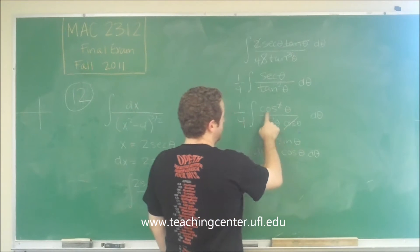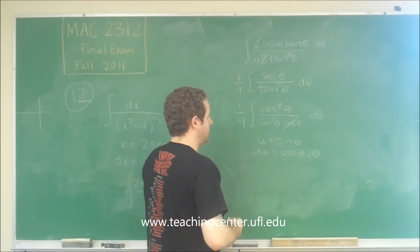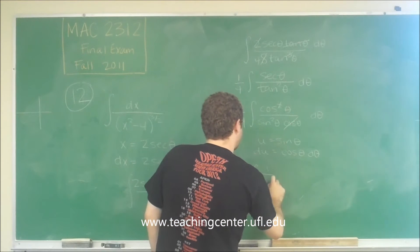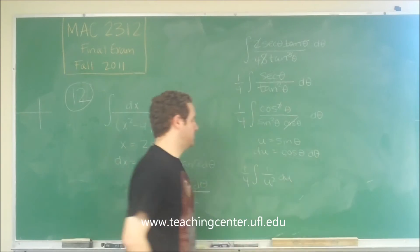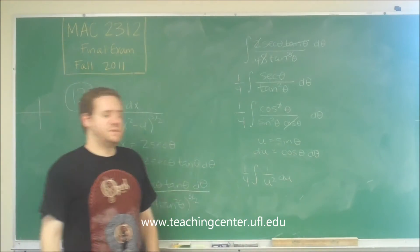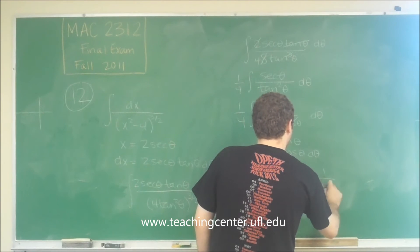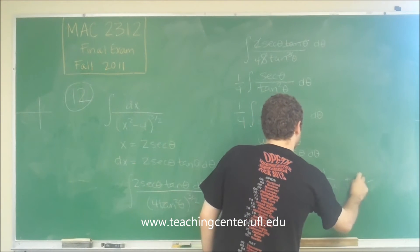And you can see that we have cosine theta d theta right there. So this integral becomes 1 fourth, 1 over u squared, du. And now we can simply take the integral. So this is going to be negative 1 over 4u plus c.